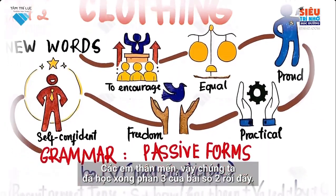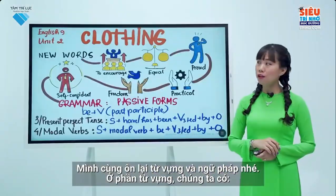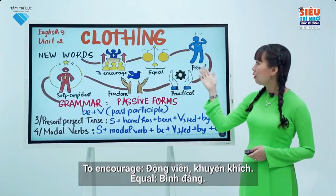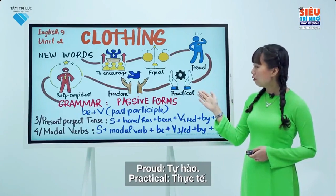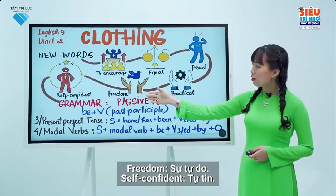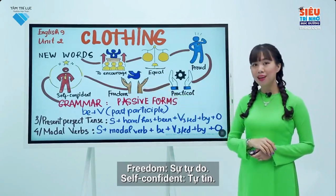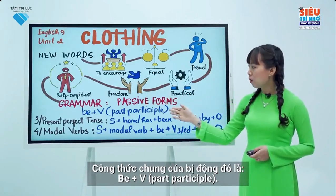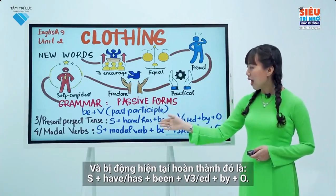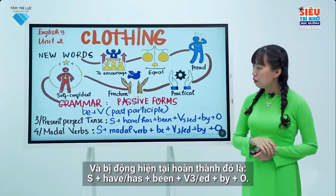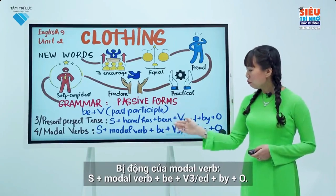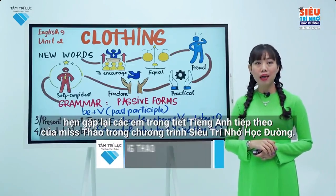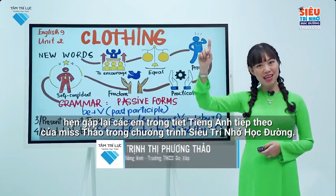My dear students, we have already learnt part 3 of Unit 2. Let's review the vocabulary and grammar. Vocabulary: to encourage, equal, proud, practical, freedom, self-confident. Grammar — passive forms: the general structure is be + verb past participle; the present perfect passive is subject + have/has + been + verb 3/ED + by + object; the modal verb passive is subject + modal verb + be + verb 3/ED + by + object. Today's lesson has come to an end. I hope everyone learns well, and see you again in the next English lesson from me, Miss Tao, in the Super Memory for Schools programme. Goodbye and see you later.